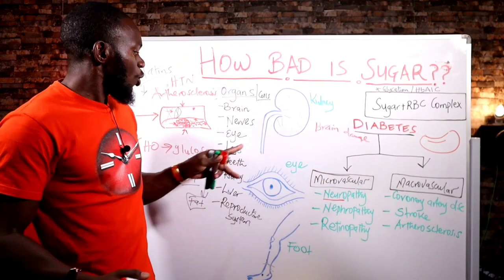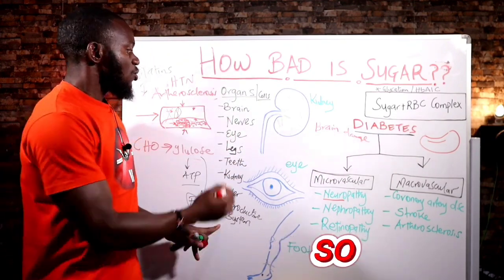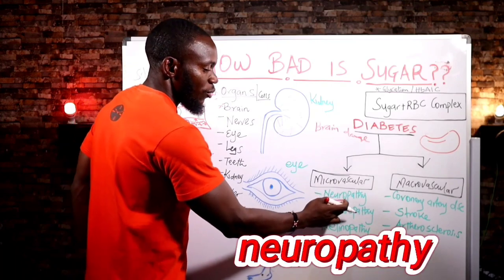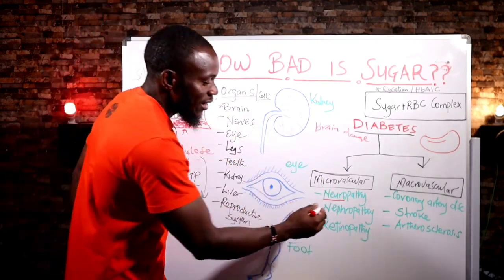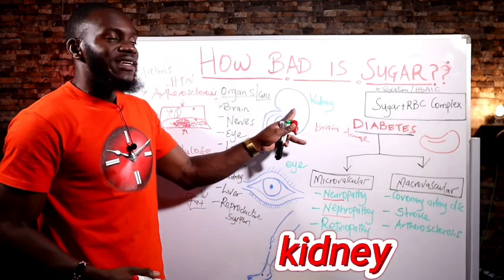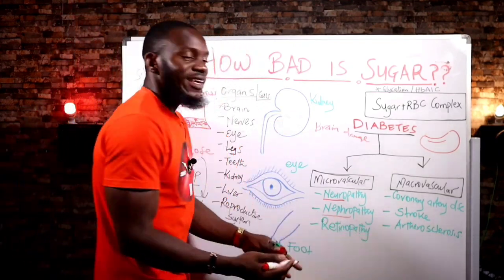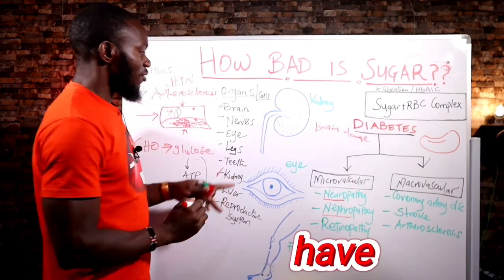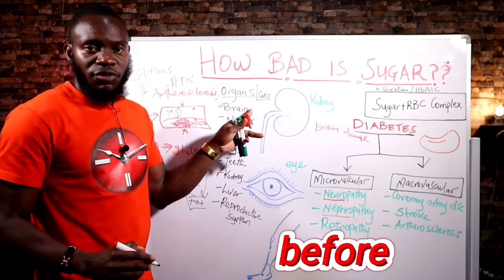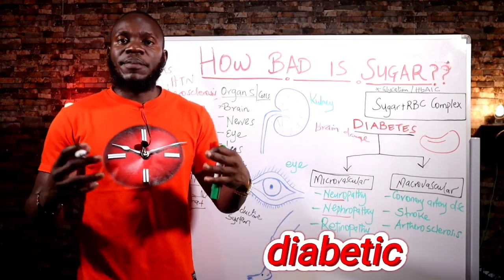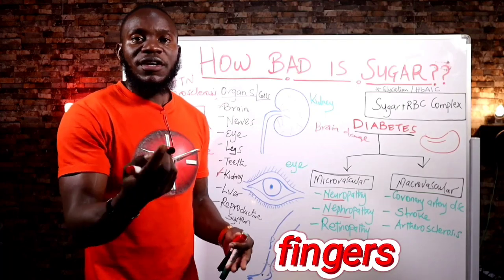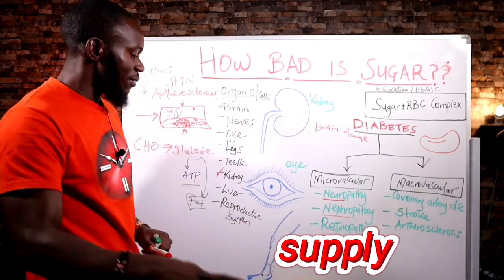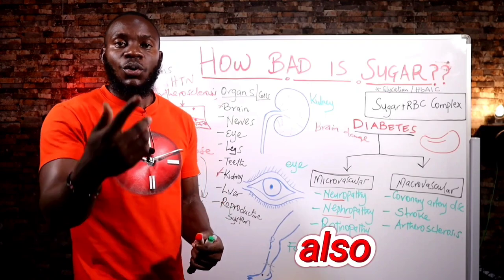So here we have the organs affected by excess sugar. We have brain damage as a result of death of brain cells and death of nerves — that is what we call neuropathy. Nephropathy: nephro refers to the nephron, the functional cell of the kidney. So nephropathy means you are destroying the cells in the kidneys. Brain and nerve destruction is the reason why diabetic patients experience numbness in their fingers and legs.